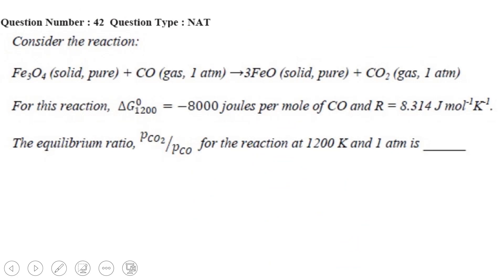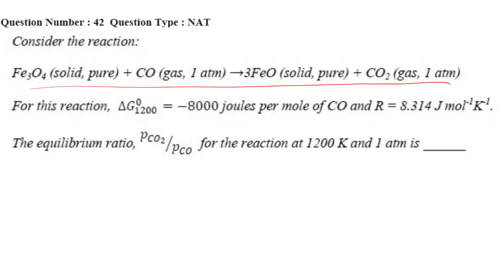Next question: consider the reaction Fe3O4(s, pure) + CO(g, 1 atm) → 3FeO(s, pure) + CO2(g). For this reaction, ΔG⁰ = −8000 J/mol of CO and R = 8.314 J/mol·K. The equilibrium ratio PCO2/PCO for the reaction at 1200 K and 1 atm is to be determined. We write the reaction and apply the equilibrium relation.